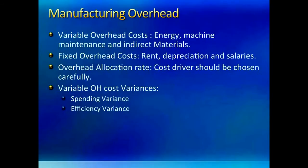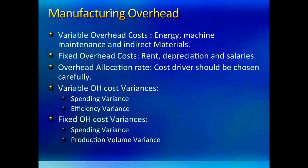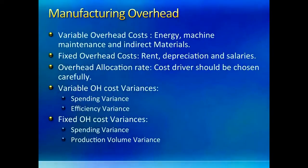Do you remember the overhead allocation rate we learned in our job costing chapter? We calculate this rate by dividing the manufacturing overhead dollars by the budgeted allocation base. In this chapter, we will learn to carefully choose our manufacturing overhead driver; otherwise, overhead costs would be under-allocated or over-allocated. We will learn to calculate two variances each for variable and fixed costs. The variable overhead variances are called spending and efficiency variance, calculated exactly the same way as the two variances for material and labor. Fixed overhead cost variances are called spending and production volume variance, and have a slightly different interpretation since fixed costs cannot be expressed on a per unit basis.